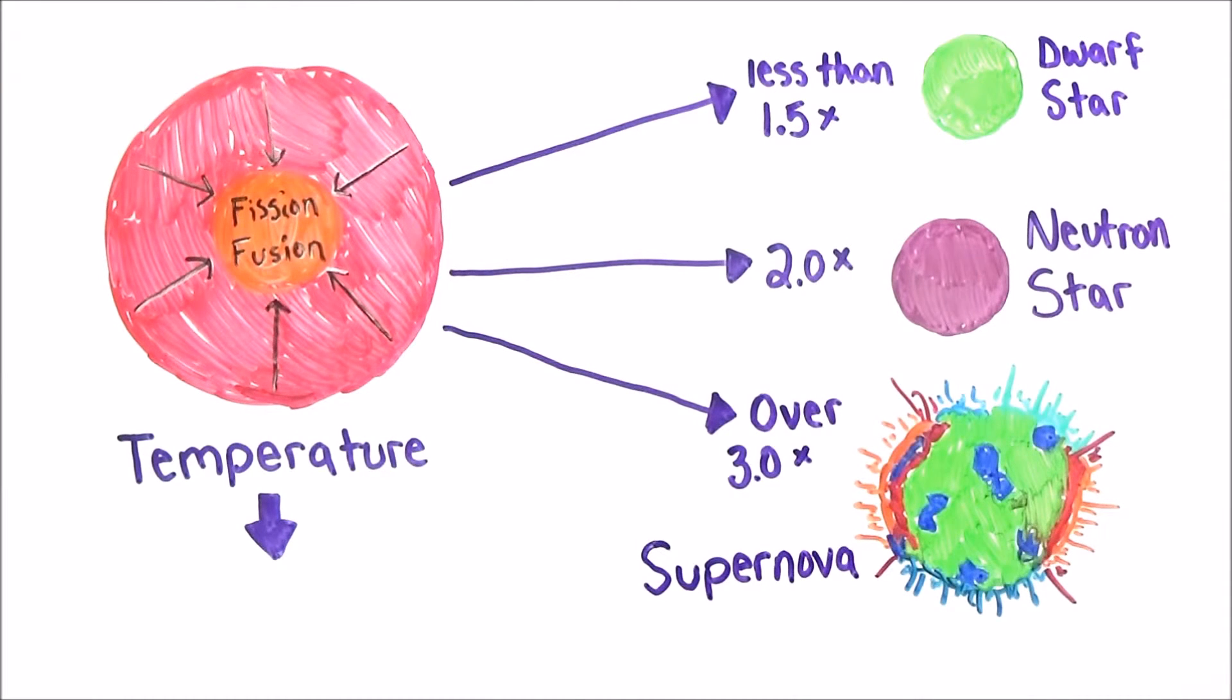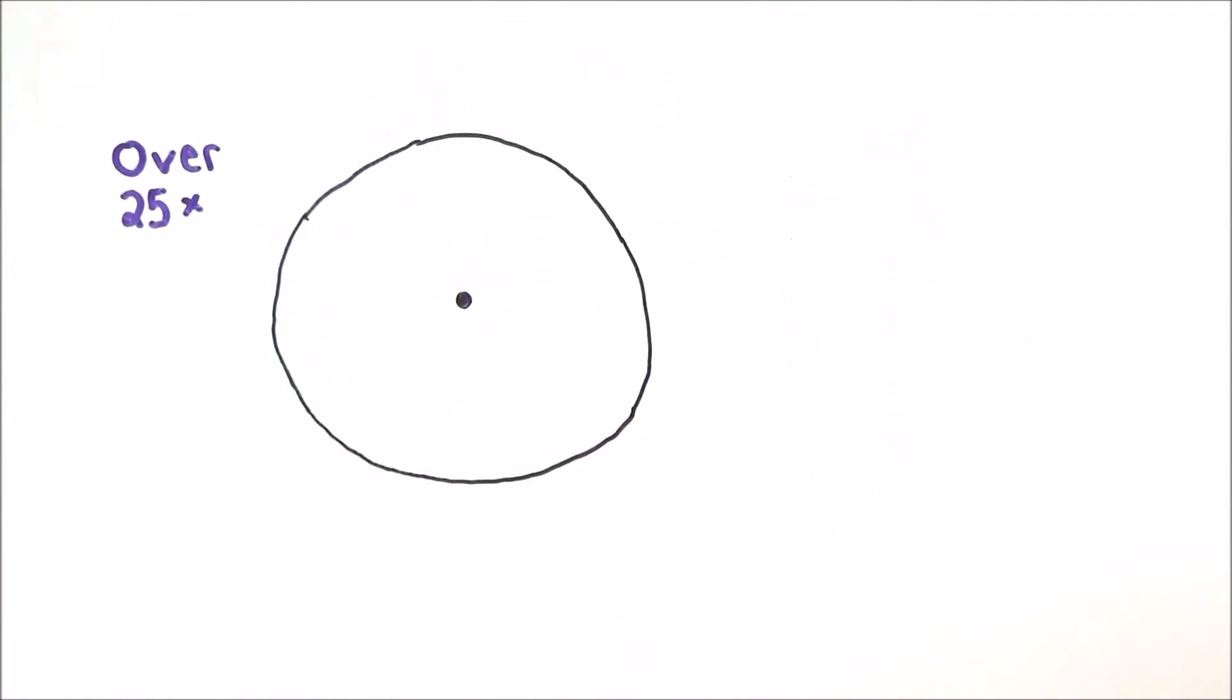Stars over 25 times the mass of the sun end up not being able to shoot out enough mass during their collapse and turn into a whole different thing, a black hole.